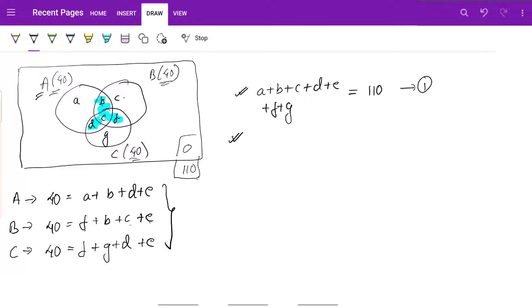So if you add these three equations, what happens is 120 equals a plus c plus g plus 2 times b plus d plus f plus 3 times e. We have e three times, we have d twice, we have b twice and we have f twice.